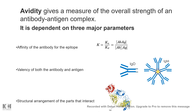Avidity depends on three major parameters. First, the affinity of the antibody towards its epitope — greater affinity leads to greater avidity. Second, the valency of the antibody — greater valency means greater avidity; for example, IgM has greater avidity than IgG. Third, the molecular arrangement of the antigen binding sites within the antibody — this three-dimensional arrangement can allow conformational changes that enable even stronger interactions. All three parameters are important in describing avidity.